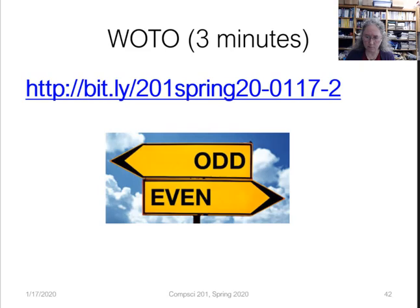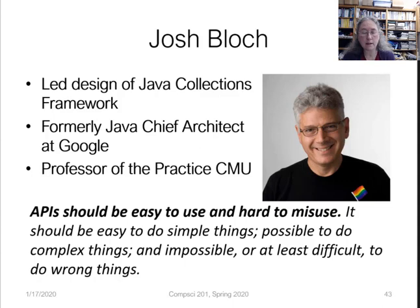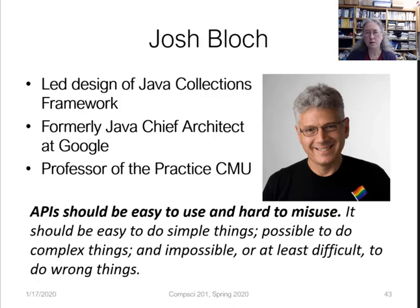This is Josh Bloch. He led the design of the Java Collections Framework and was formerly the Java Chief Architect at Google; he's currently a Professor of the Practice at CMU. He says: 'APIs should be easy to use and hard to misuse. It should be easy to do simple things, possible to do complex things, and impossible — or at least difficult — to do wrong things.'